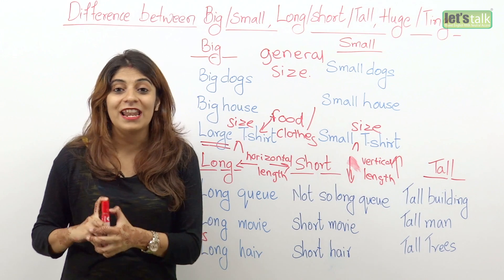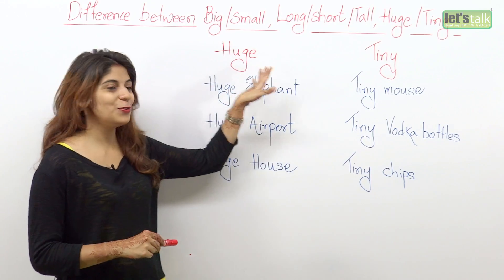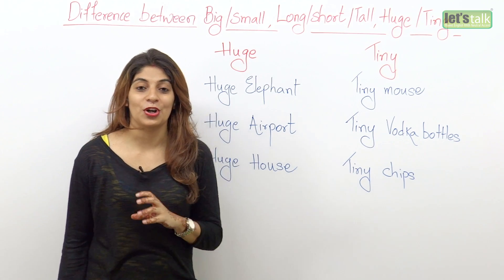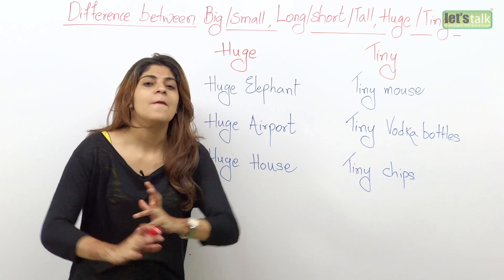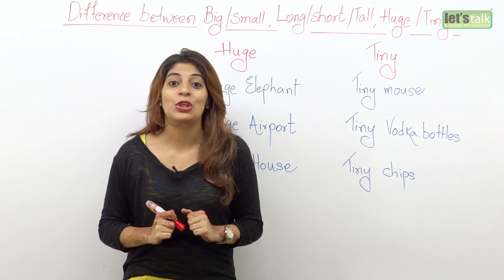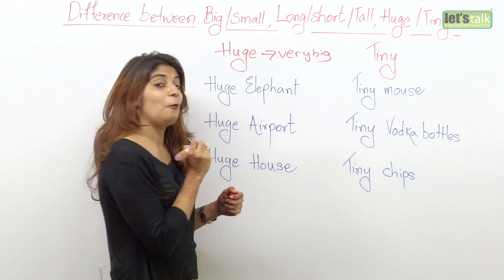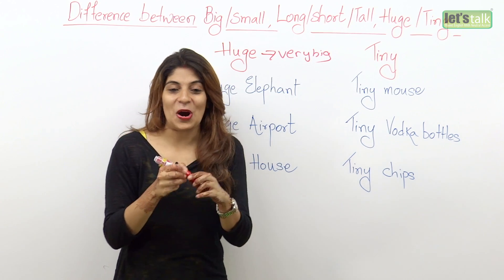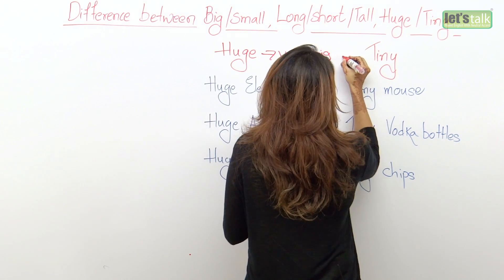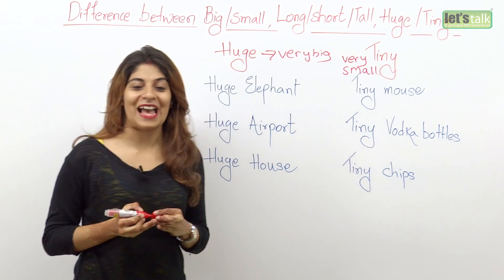Now let's understand when and how to use huge and tiny. When you talk about very big things or very big sizes, you use the word huge. When you use the word tiny, you are talking about something really small — miniature.